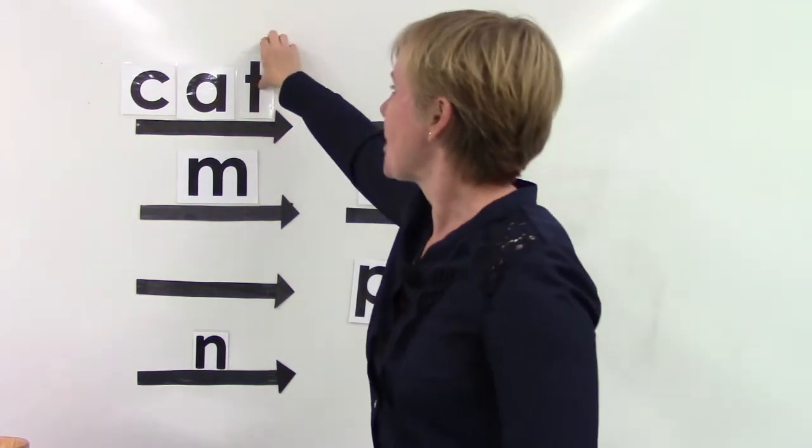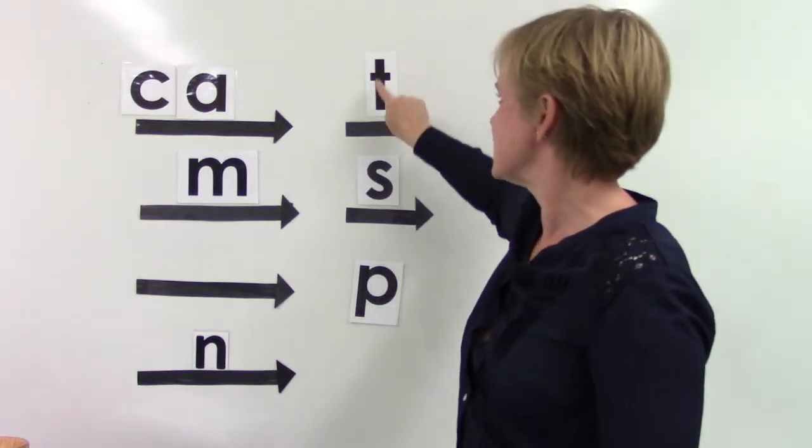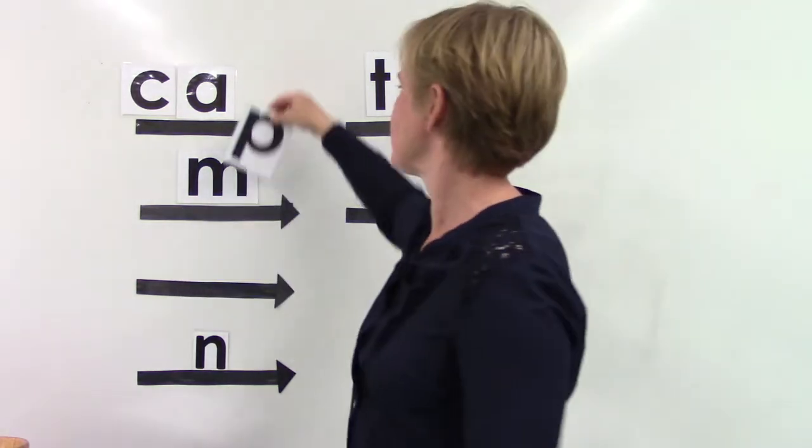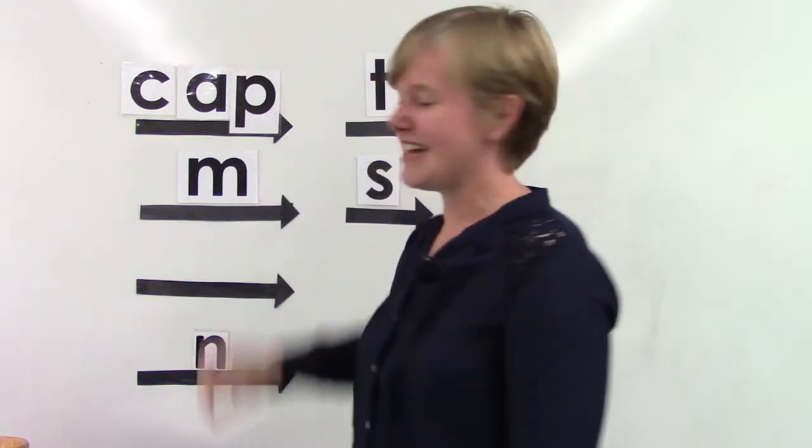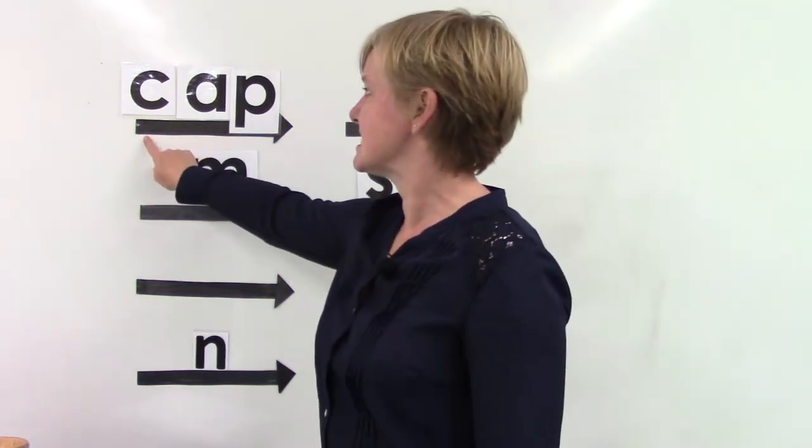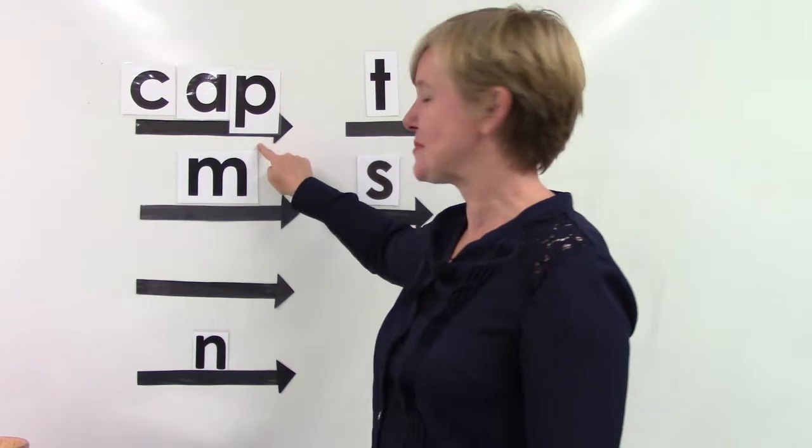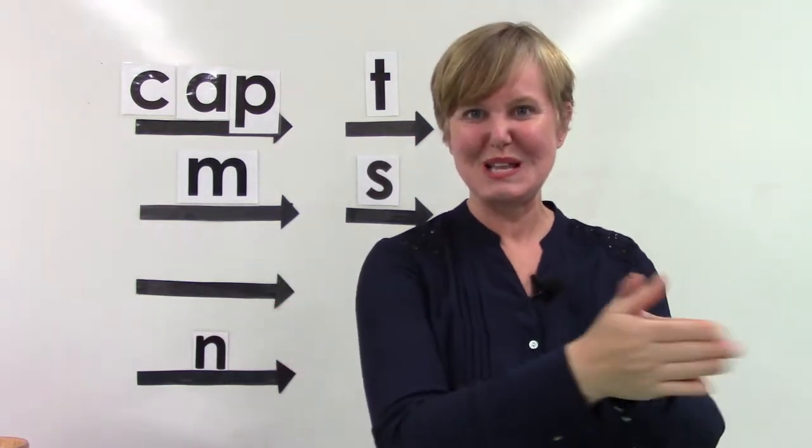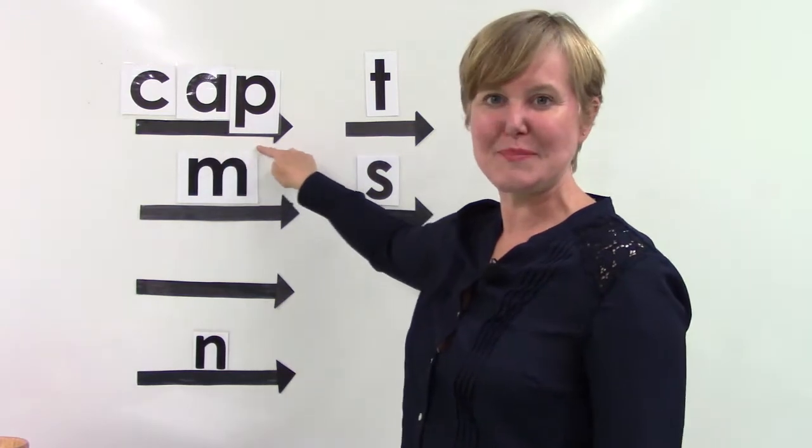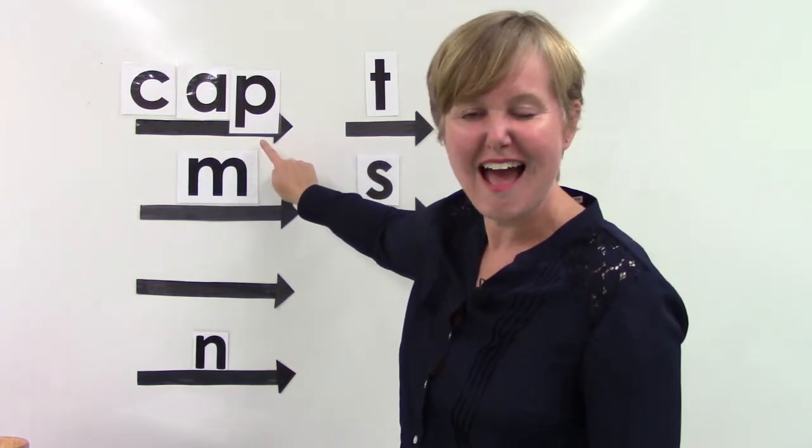What if I swap out the T at the end? What if I swap out the T and put in a P? Let's say these sounds together. K, A, P. Blend them slowly. K, A, P. Say it fast. Cap.